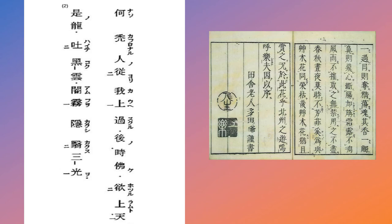Likewise, kunten — little annotations to Chinese texts — were added to aid the Japanese rendition, and it came in two classes: kana glosses and okutokten.